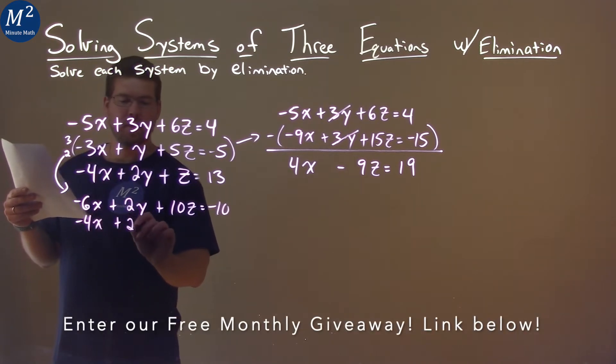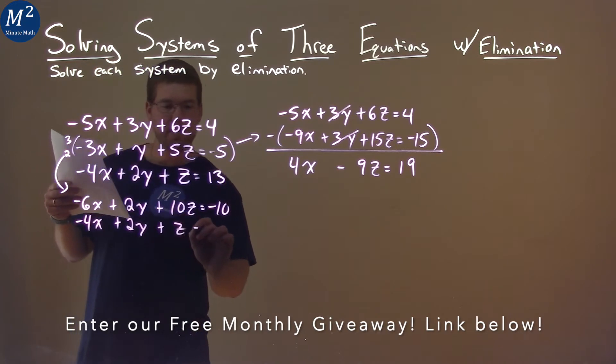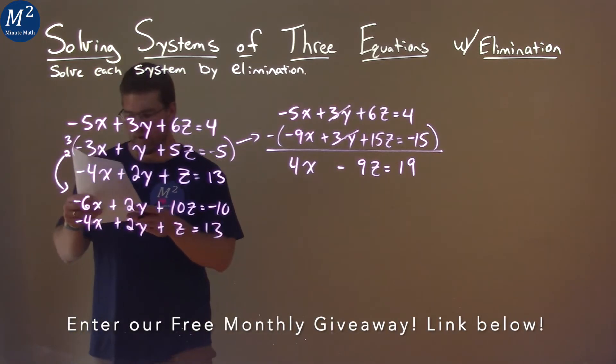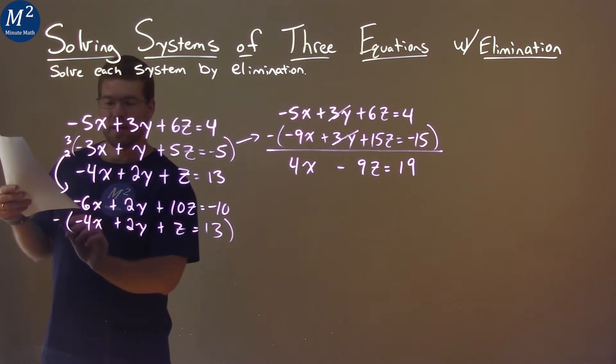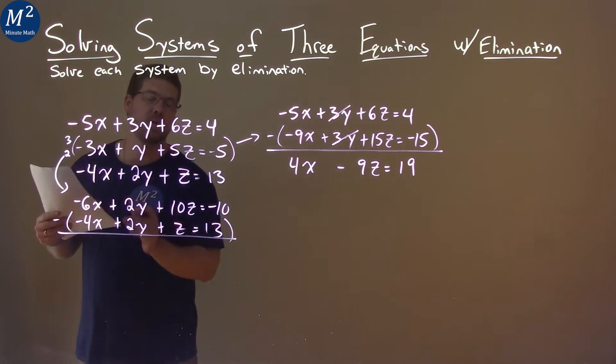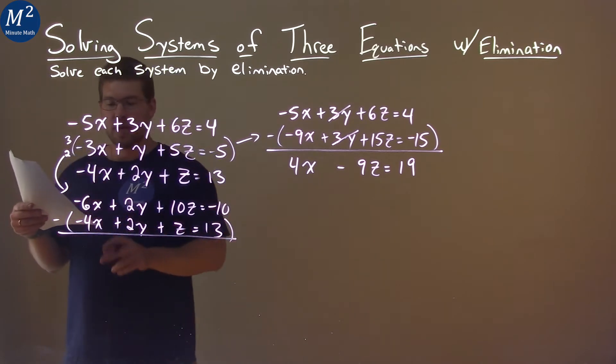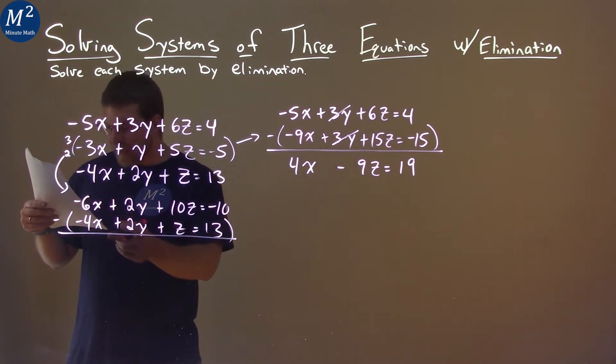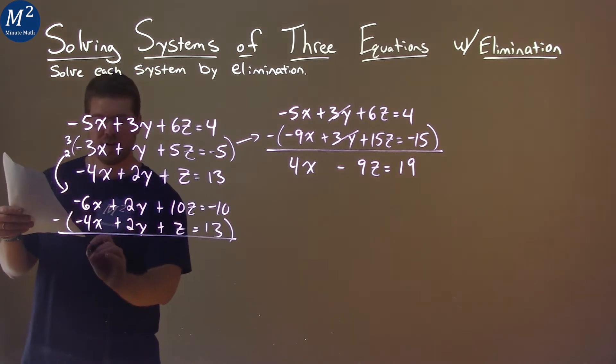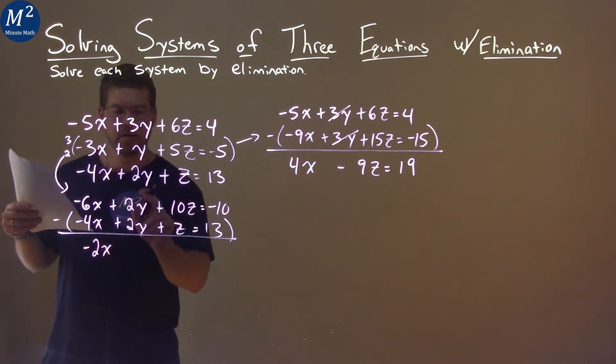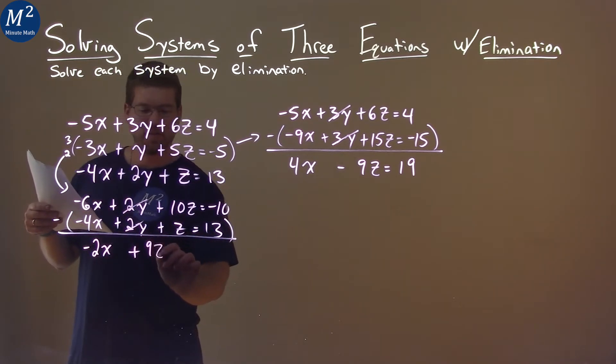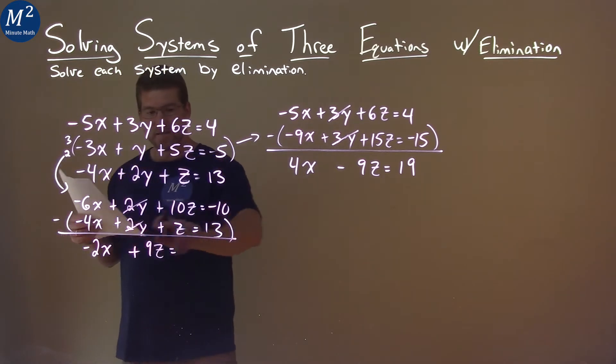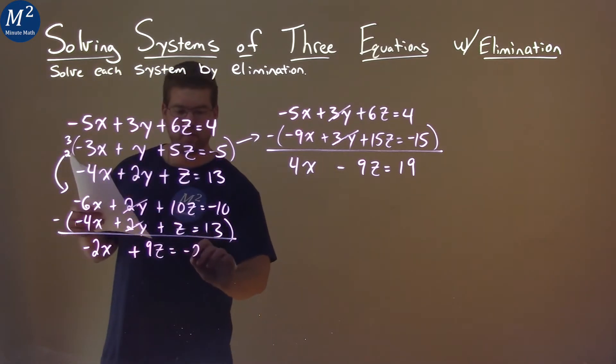Negative 4x plus 2y plus z equals 13. So now we want to subtract these two equations, and that's going to eliminate the second y's here. Negative 6x minus a negative 4x, it's like adding 4x, and we have negative 2x here. 2y minus 2y, they're eliminated. 10z minus 1z is plus 9z. And negative 10 minus 13 is negative 23.